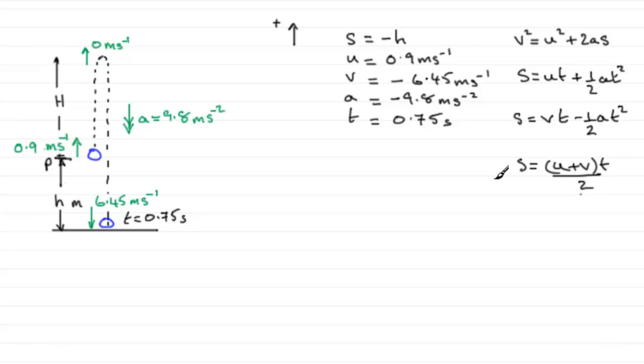So if we use that one there, let's say using S equals U plus V, all multiplied by T over 2. What's going to happen then? Well, S is going to be minus H equals U plus V.